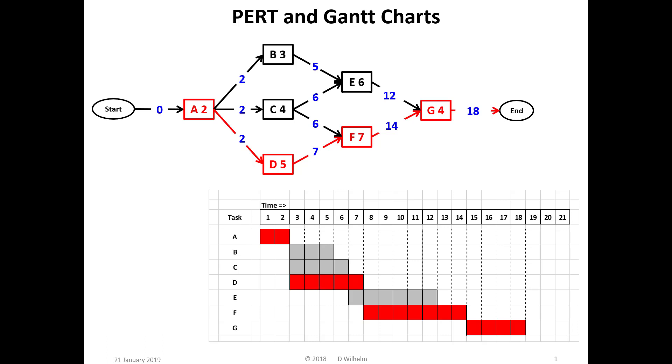This video is an introduction to two chart types that are useful in project management. The top one is a PERT chart, program evaluation and review technique, useful primarily during the planning and organizing phases of a project. I believe it was developed in the 1950s as a collaboration between Booz Allen Hamilton and the U.S. Navy.